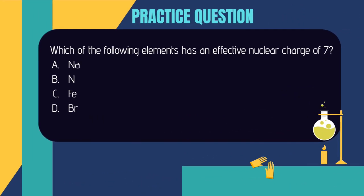Okay, let's try a practice question. Which of the following elements has an effective nuclear charge of 7? Think this question over and come up with an answer. And then continue watching the video to see my solution.